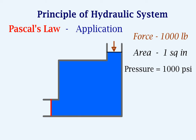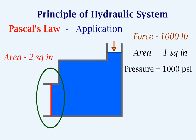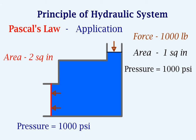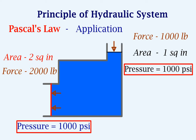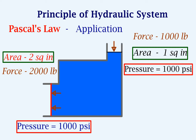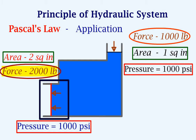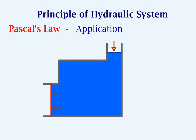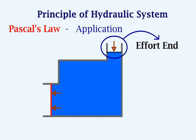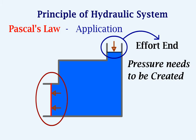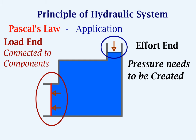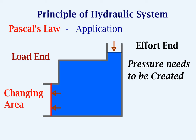Now let's increase the area in this section to 2 square inches. The pressure is again 1000 psi, but if we calculate the force we get 2000 pounds. So for the same pressure, just by increasing the area, we are able to increase the force in this part of the container. This is called the effort end where the pressure needs to be created. This is called the load end which can be connected to different components that need to be moved. By changing the area at the load end, the force is modified depending on the requirement.